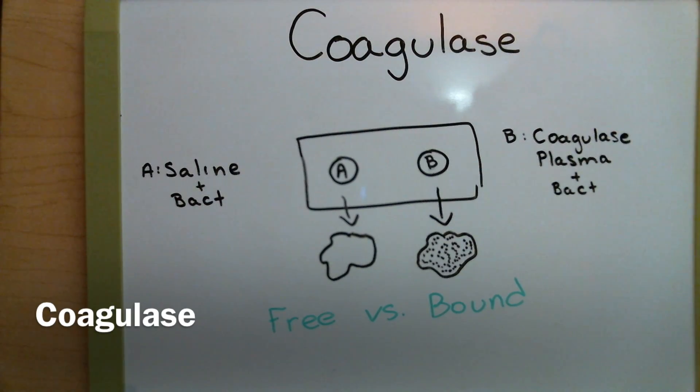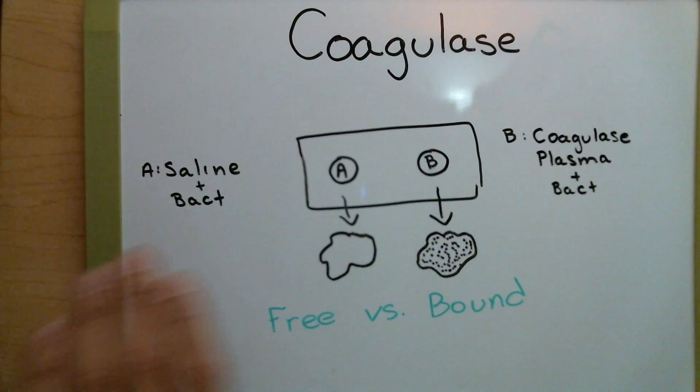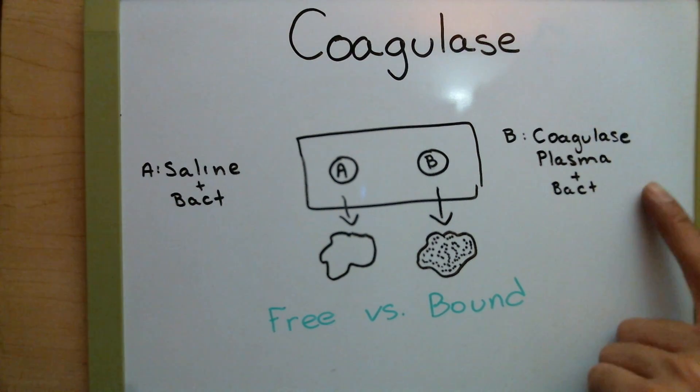And here we're going to look at the coagulase test. In the coagulase test, we're going to take a slide and split it in half. On half A, we're going to have the saline plus the bacteria, and on side B, we're going to have the coagulase plasma and the bacteria. Side A is simply a control to show us what a negative result is because there's nothing in saline that the bacteria can react with that will cause it to agglutinate.